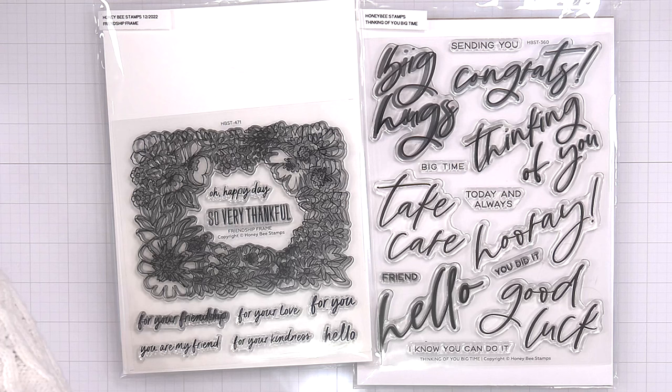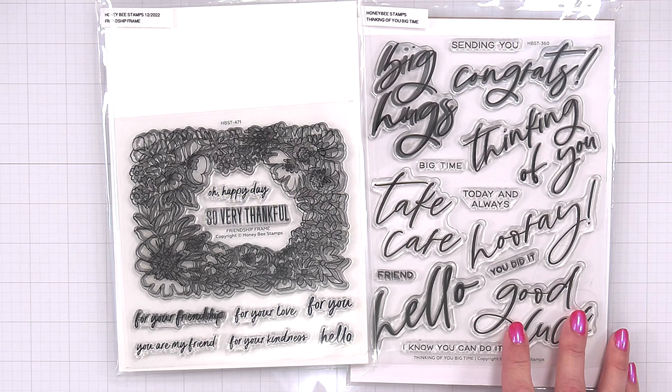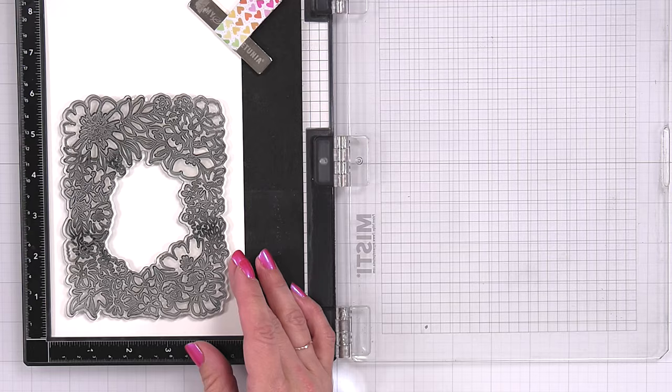So here is a quick look at a couple of the products I'm going to be using. I have the Friendship Frame Stamp Stencil and Die, and then I'm also going to be using a sentiment from the Thinking of You Big Time, which is another one of my favorite sets.